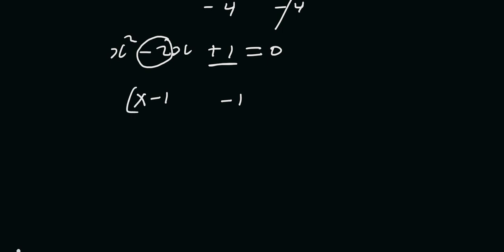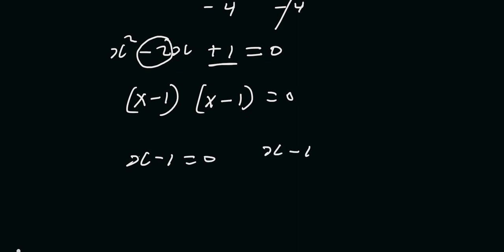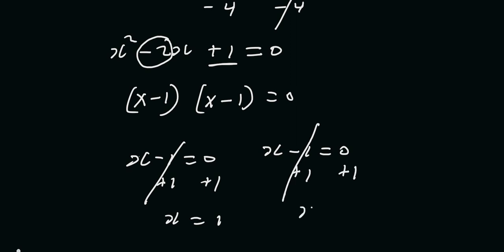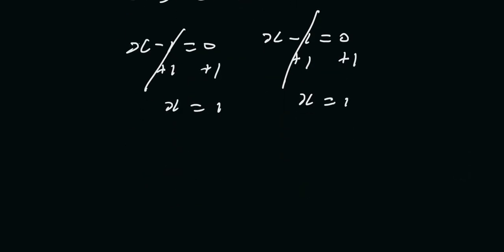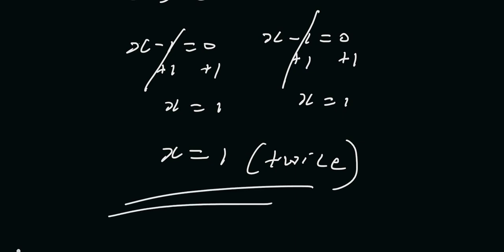So we add x to each factor: (x-1)(x-1) = 0. Since both factors are the same, we set x-1 = 0. Adding 1 to both sides gives x = 1. This is a repeated root, so x = 1 is the final answer to Question A.